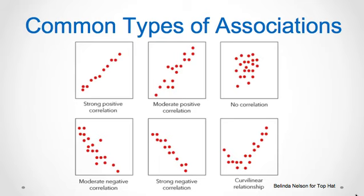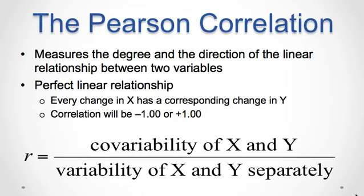Here are some more scatter plots that visually represent different types of relationships. The most common correlation coefficient is the Pearson R, or the Pearson product moment correlation, which measures the degree or strength and the direction of the linear relationship between two continuous variables. Conceptually, this correlation is calculated as R equal to the degree to which X and Y vary together divided by the degree to which X and Y vary separately — that is, the co-variability of X and Y divided by the variability of X and Y separately.